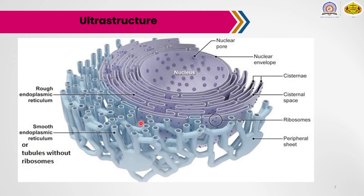The rough endoplasmic reticulum, also known as the granular endoplasmic reticulum, possesses ribosomes that remain attached to its membrane. The rough ER is found abundantly in cells that are active in protein synthesis, such as pancreatic cells, plasma cells, goblet cells, and liver cells. The main function of the rough ER is protein synthesis.